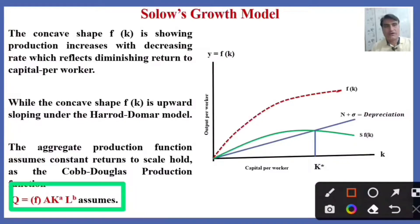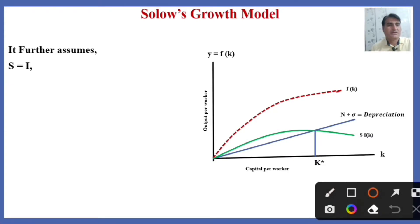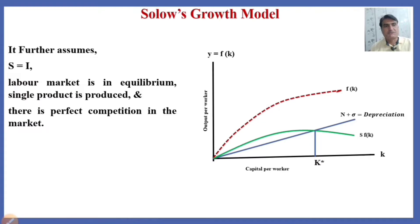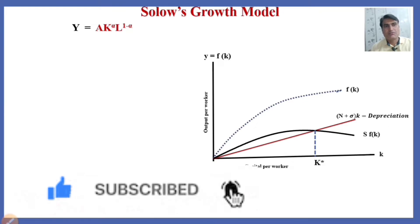We use the Cobb-Douglas production function Q = A * K^alpha * L^(1-alpha), where Q is output, A is productivity or technological change, K is the amount of capital, and L is the amount of labor. Alpha and beta are the elasticities of capital and labor. Solow's model further assumes that saving and investment are equal, the labor market is in equilibrium, a single product is produced, and there is perfect competition in the market. Details on the Cobb-Douglas production function are available via the link in the description box.